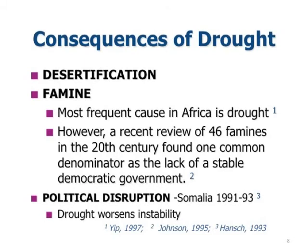Consequences of drought include desertification and famine. Drought is also closely associated with political disruption, especially in Africa.